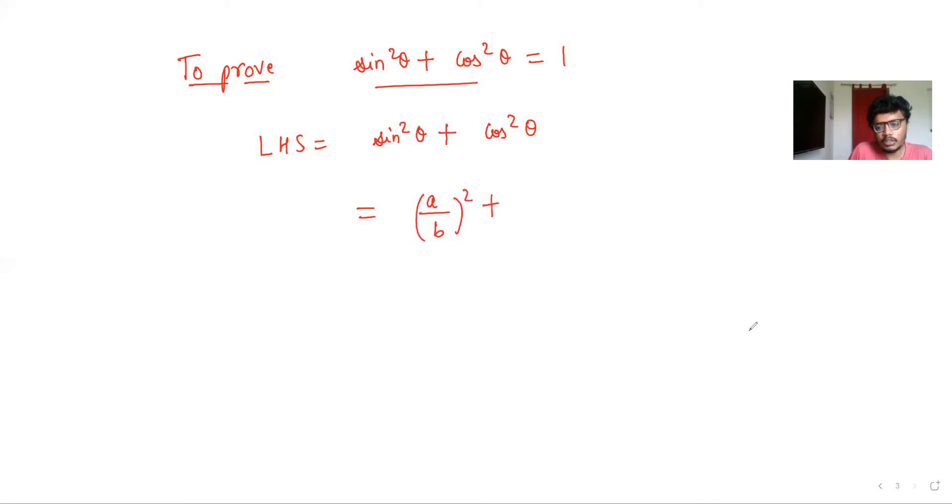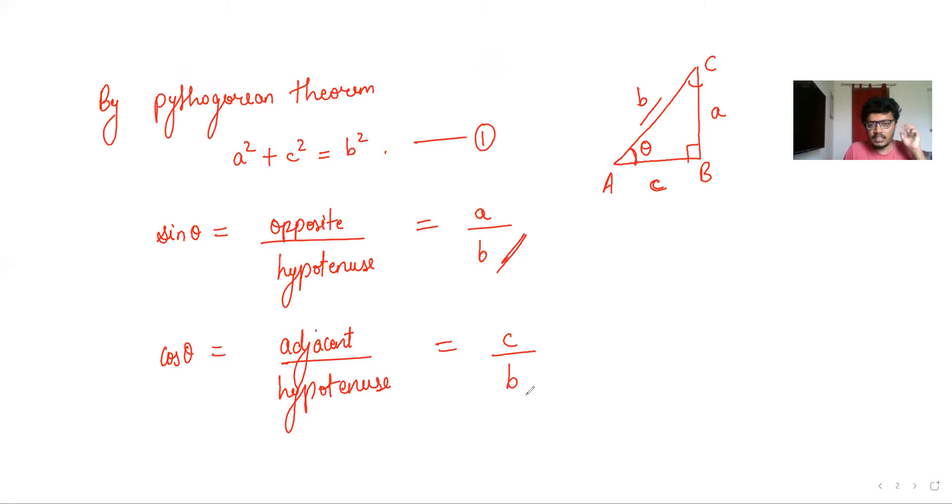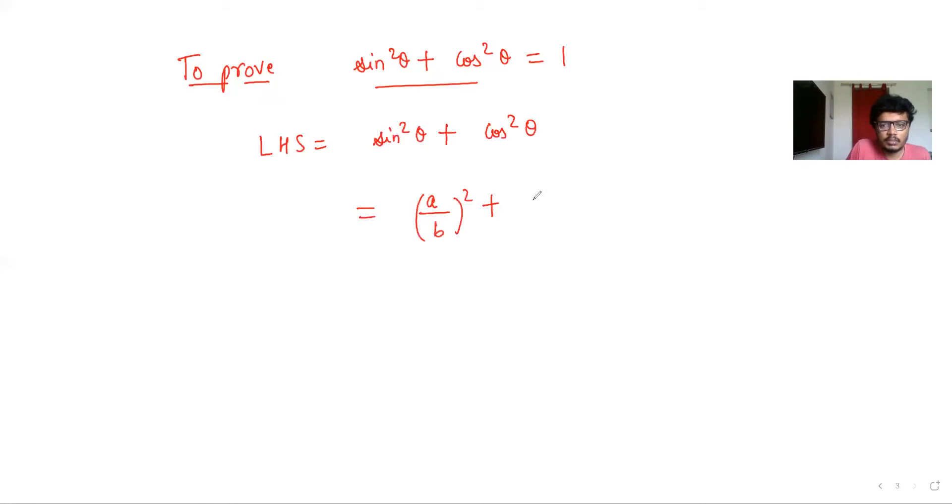plus what is cosine θ? Cosine θ is c by b, plus (c/b)². Now this is equal to a²/b² + c²/b², which is equal to (a² + c²) divided by b².